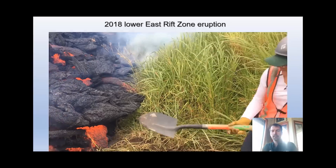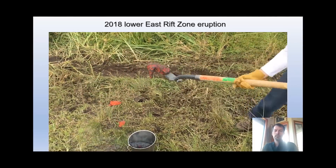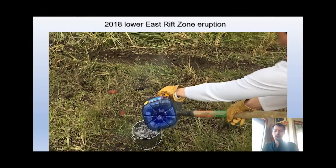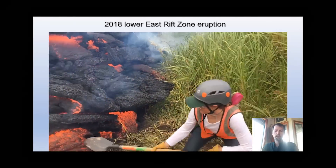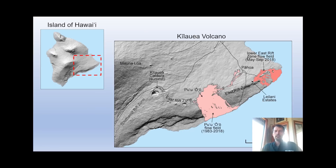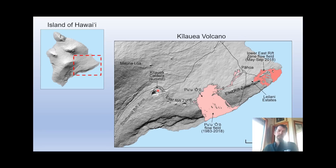So we talked about the Pu'u 'Ō'ō eruption, the summit eruption, and the Lower East Rift Zone eruption. When we had that Lower East Rift Zone eruption in 2018, it drained magma from the main magma chambers below the summit caldera. The eruption was so voluminous that it drained magma from the summit magma chamber at a very high rate - draining a lot of magma. What that did is cause the caldera floor to drop and collapse in and subside - by more than 500 yards, which is a lot.